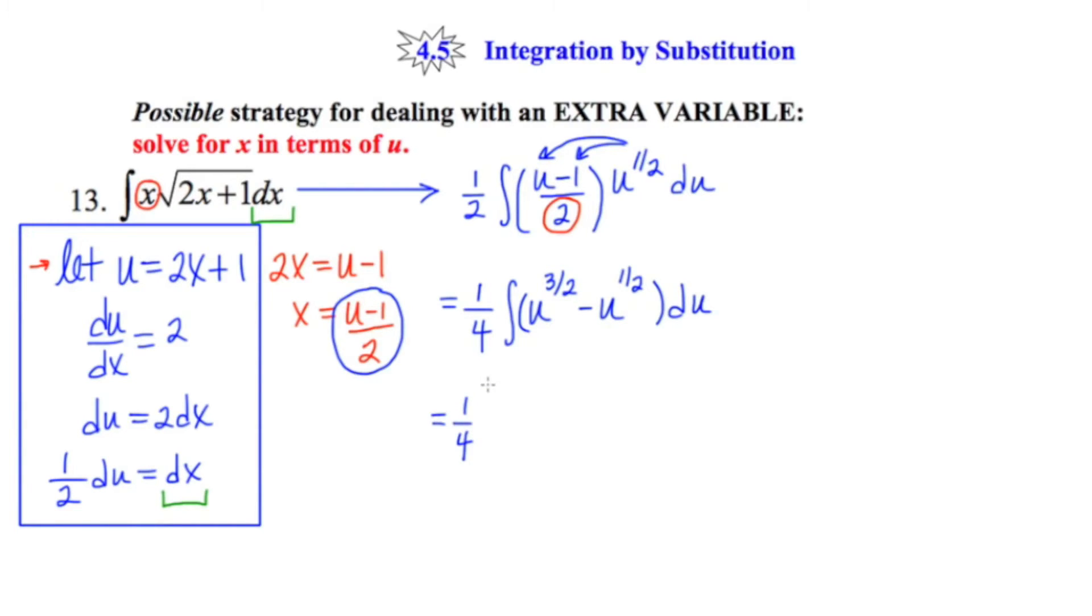And now I'm going to find the anti-derivative of each of these terms. The power of 3 halves becomes 5 halves, and I'll multiply by the reciprocal 2 fifths. The power of 1 half becomes 3 halves, and its reciprocal would be 2 thirds.